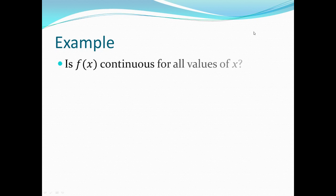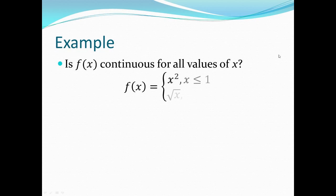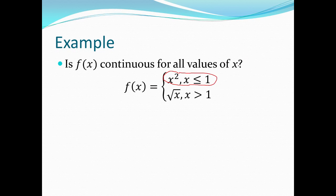Let's go through some examples. Here is f of x. We want to know: is this continuous for all values of x? The function is a piecewise function where for part of the function it's equal to x squared, and for the rest of the function it's equal to the square root of x. We need to first figure out if each part is always continuous, and whether there are any points of discontinuity.